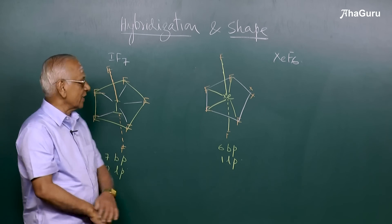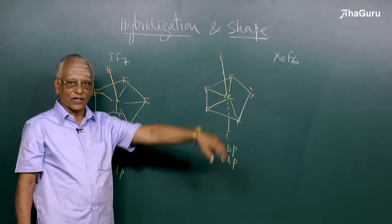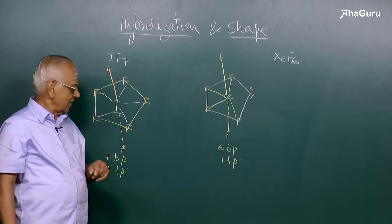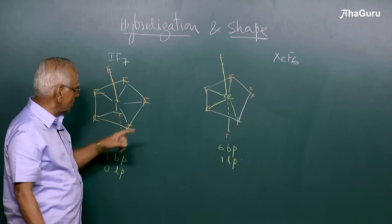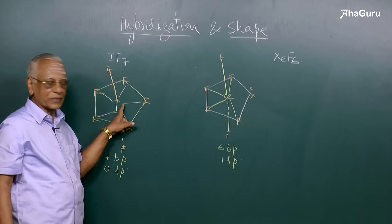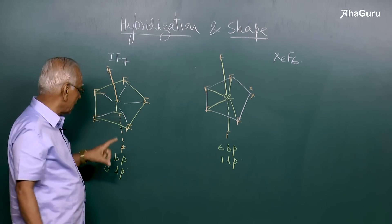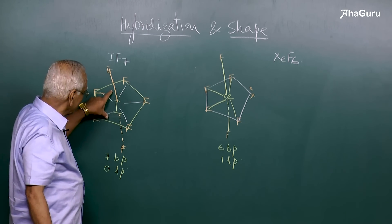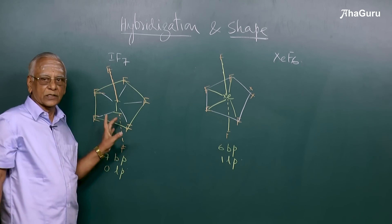I have taken two examples: iodine heptafluoride and xenon hexafluoride. In iodine heptafluoride, iodine has seven electrons in the valence shell. Each electron of fluorine combines with each electron of iodine to form a single bond, so all seven electrons are used. This gives seven bond pairs and zero lone pairs around iodine.